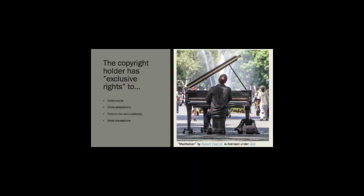Having exclusive rights means that the copyright holder can do what they want with their work. They can make copies of it, get it translated into other languages, make adaptations to it — for example, allow their books to become a movie or a play, as was the case with Rowling's Potter books.